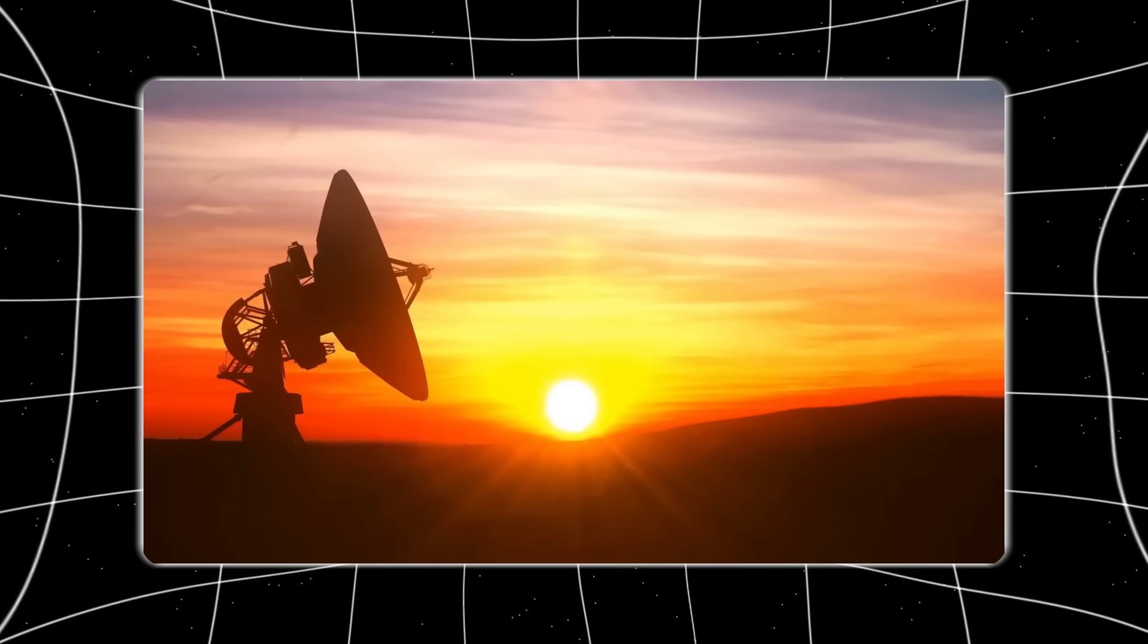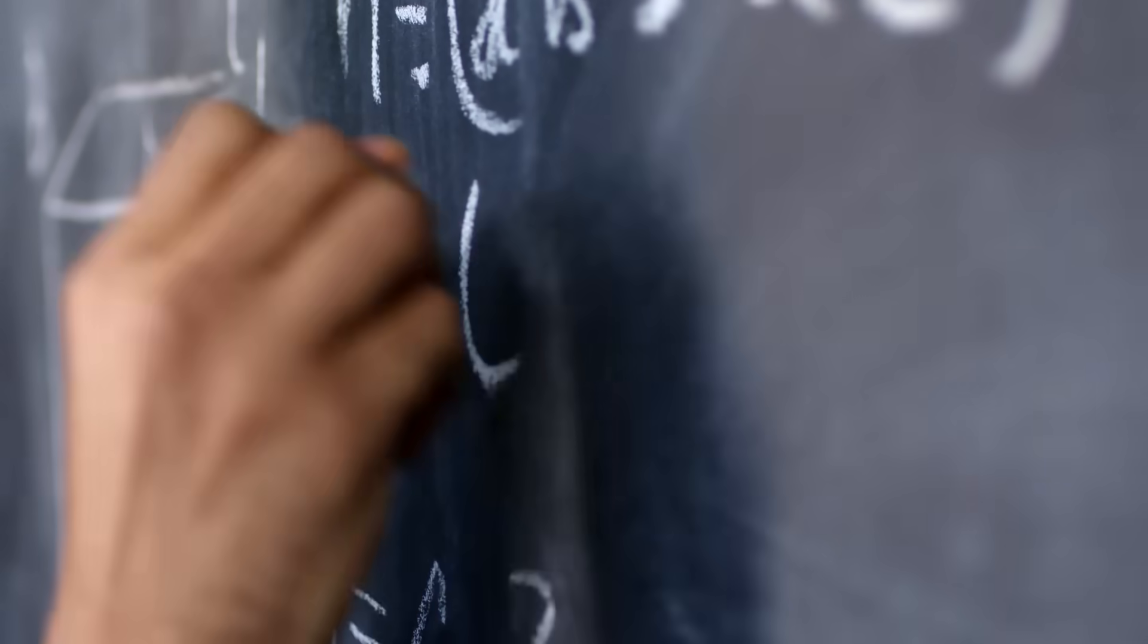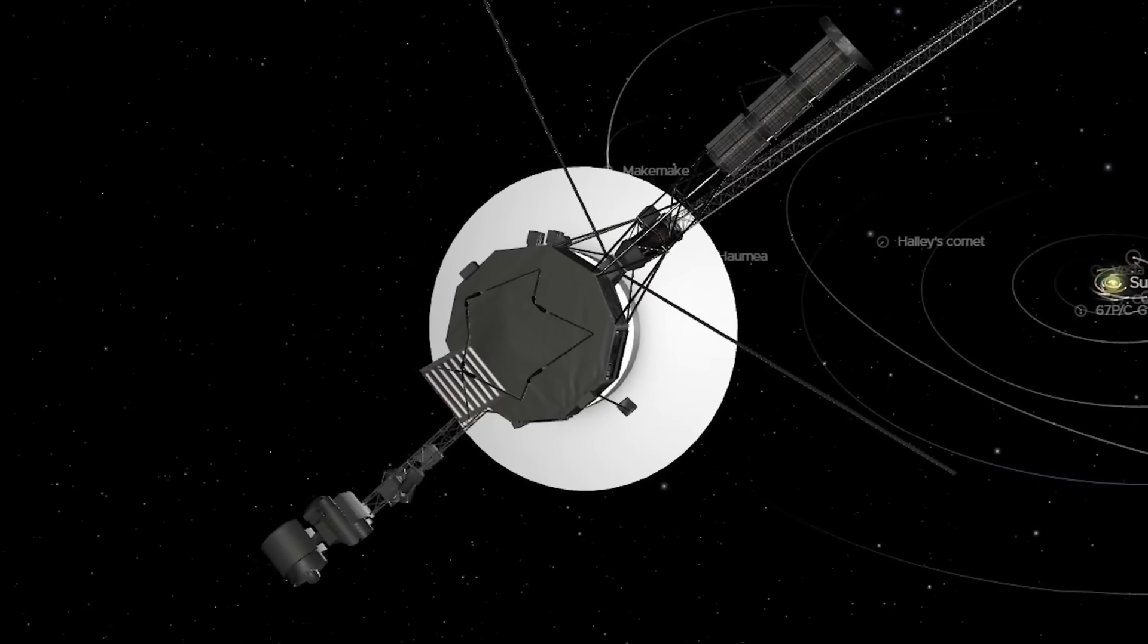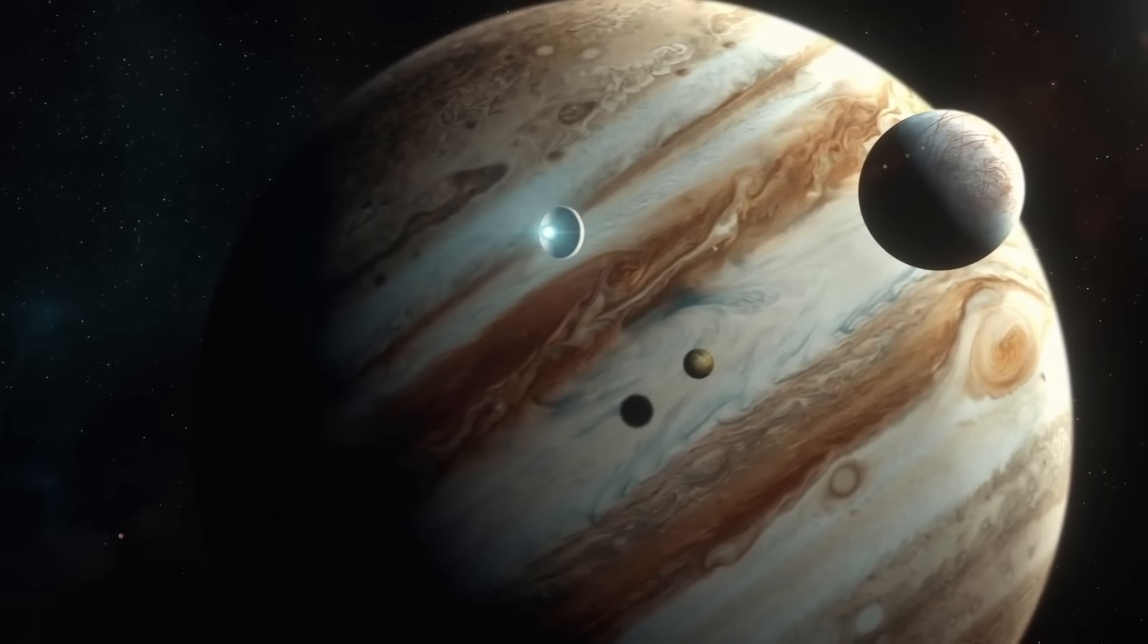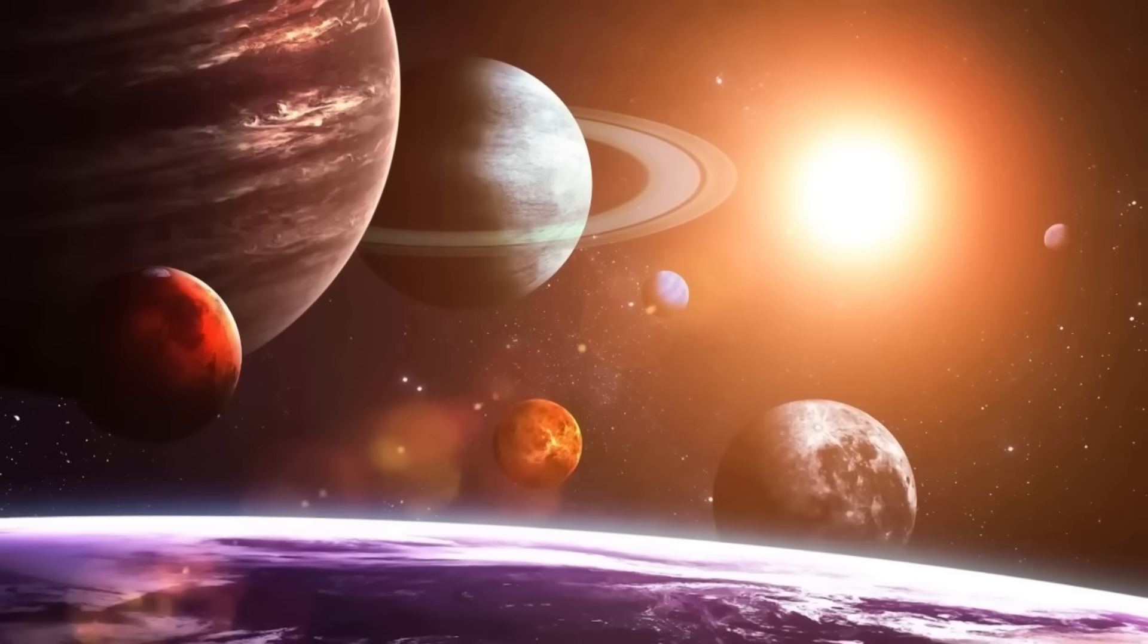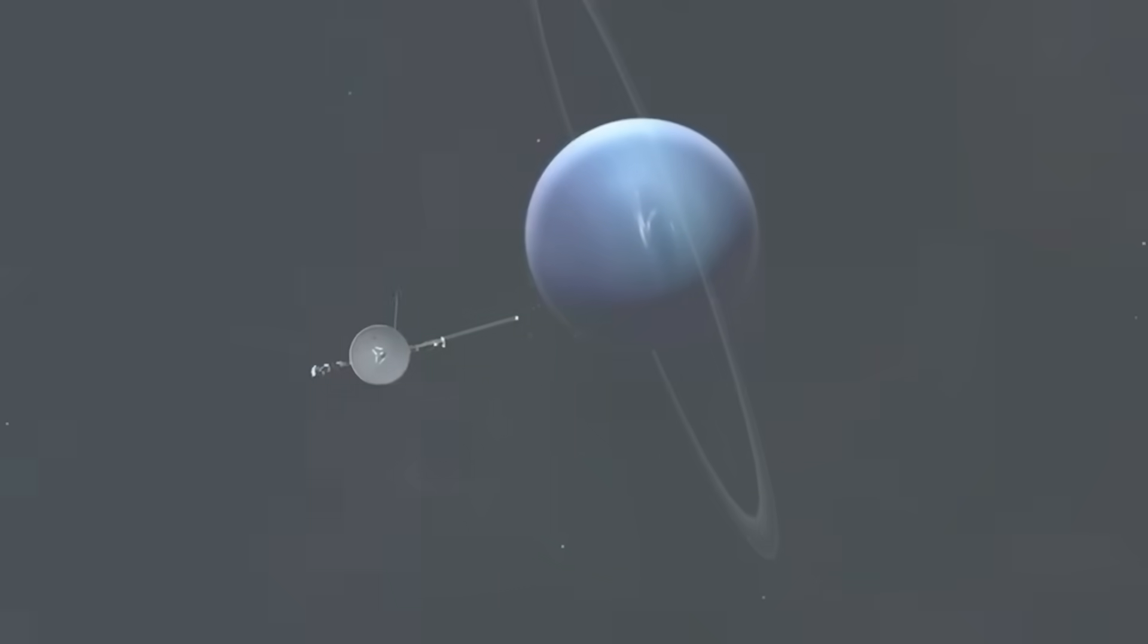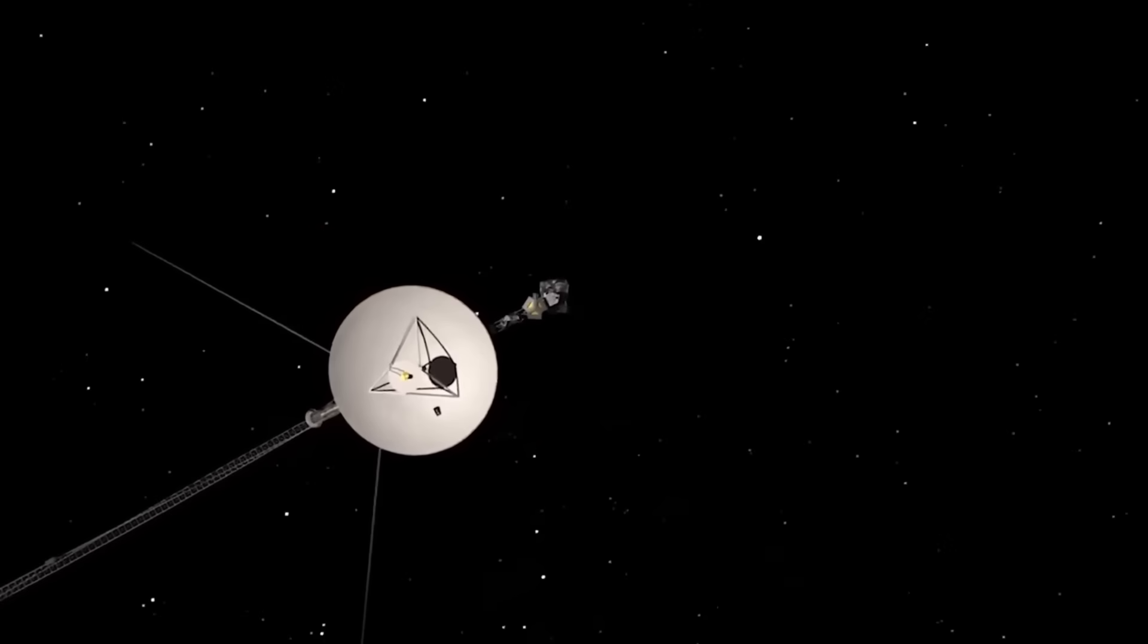What makes this even more remarkable is how precise everything had to be. A tiny navigational error early on could have ruined the entire mission, yet Voyager 1 executed its trajectory with astonishing accuracy, flying past Jupiter, then Saturn, and finally being flung upward and out of the plane of the planets. That final maneuver set Voyager 1 on a one-way path toward interstellar space, a path no spacecraft had ever taken before.